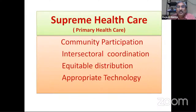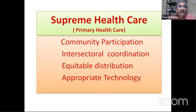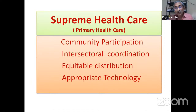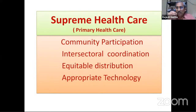Together we can achieve supreme healthcare. If the agriculture department, health department, education department all work together, we can achieve supreme healthcare. At the same time, equitable distribution is essential — on one side people are demanding more vaccination, on another side those who do not want to take the vaccine are being forced. This is a classical example of inequitable distribution. Equitable distribution means those who need more should get it.